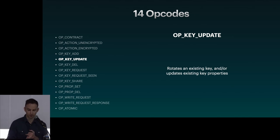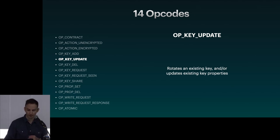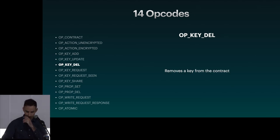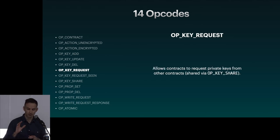OPKeyUpdate either rotates an existing key — for example, if a user wants to change their password — or updates key properties. Keys have certain properties in Shelter Protocol: they have permissions, which specify what actions they're allowed to perform, and they also have a ring level, which specifies the precedence the key takes over other keys. OPKeyDel just removes a key from a contract.